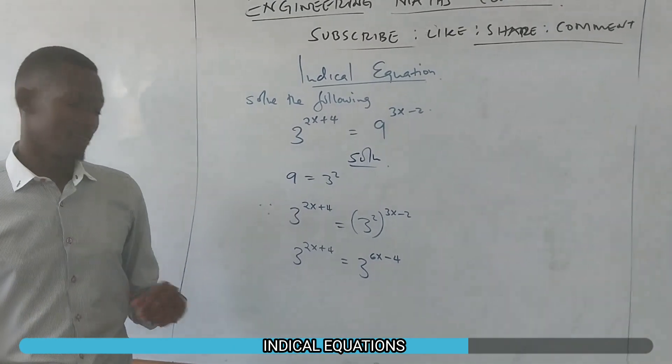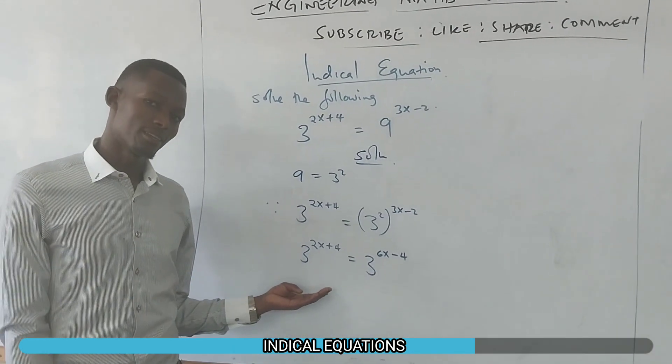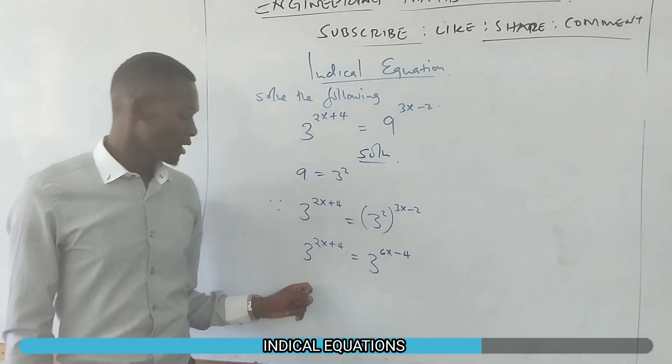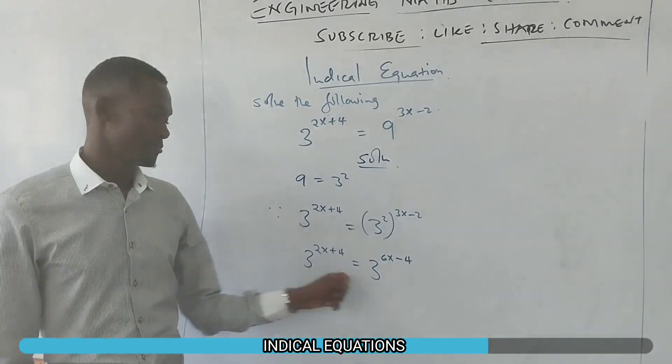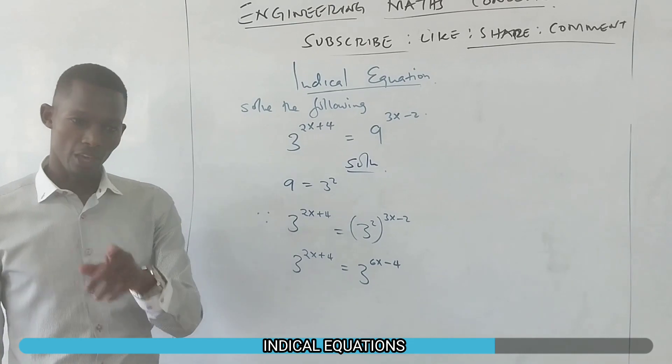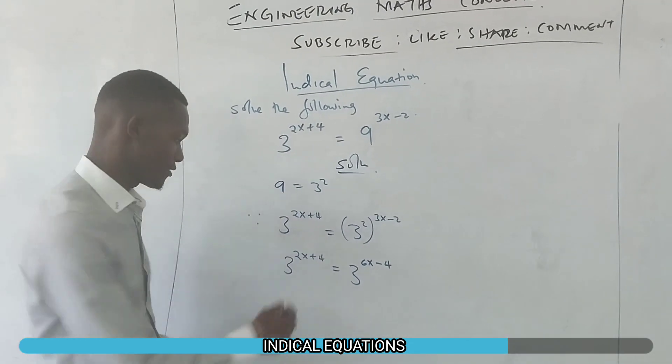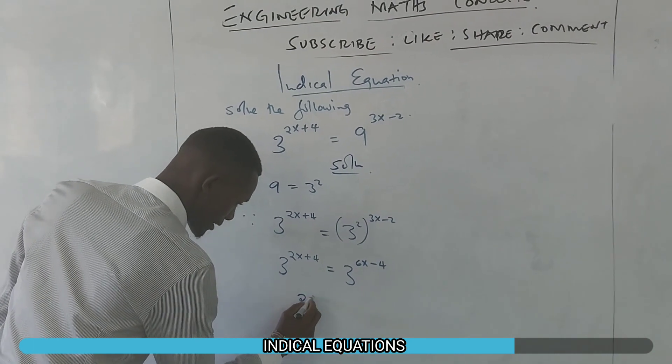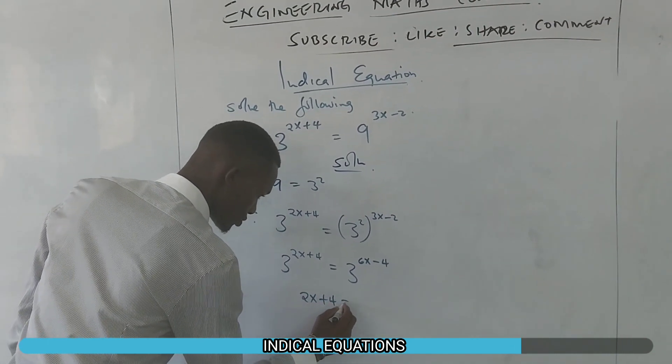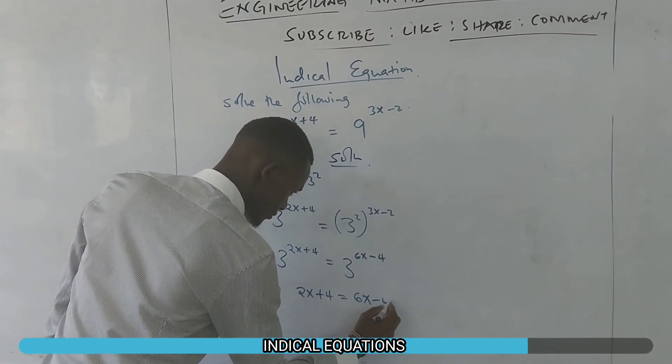Now, we are saying whatever is on this side should be the same on this side. Now one thing, the base is the same. We can verify that. So therefore, even the powers need to be the same. So therefore, 2x plus 4 should be the same as 6x minus 4.